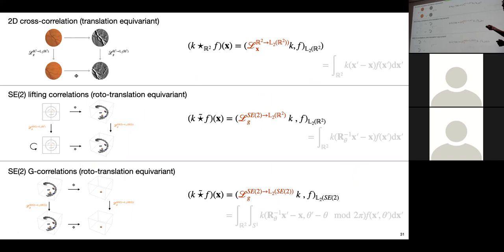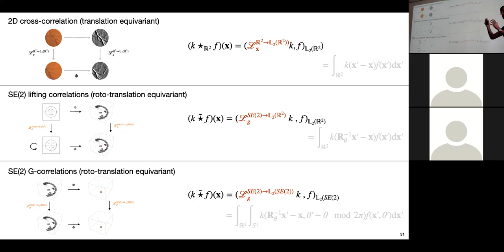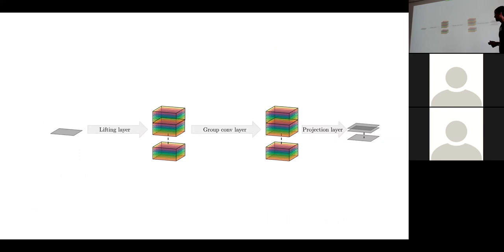All these correlation and convolution-type operators follow the same form: template matching of a kernel with the underlying signal, applying some transformation to the kernel. If the transformation comes from a transformation group, you can call it a group convolution. In the translation case it's translated; in the lifting correlation case you rotate and translate; in the SE(2) case you also rotate and translate the kernel. This is the general structure of a group convolutional neural network.